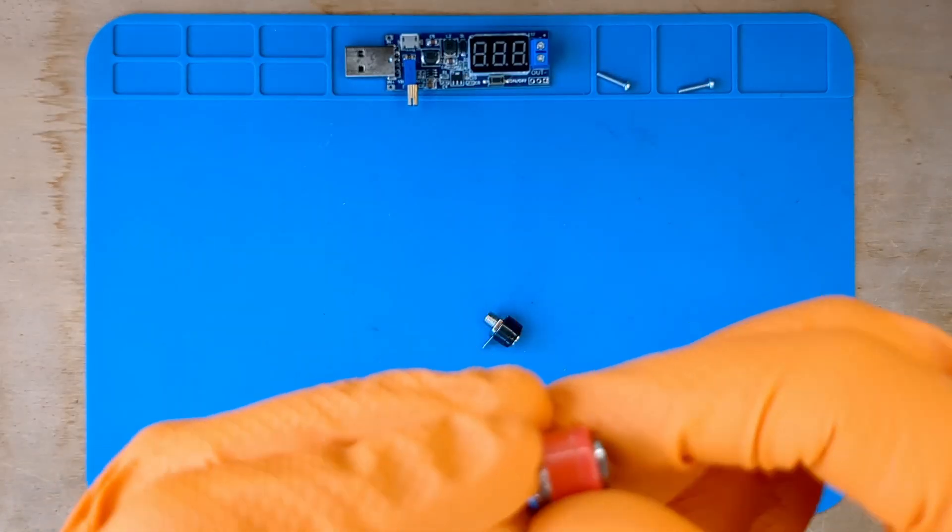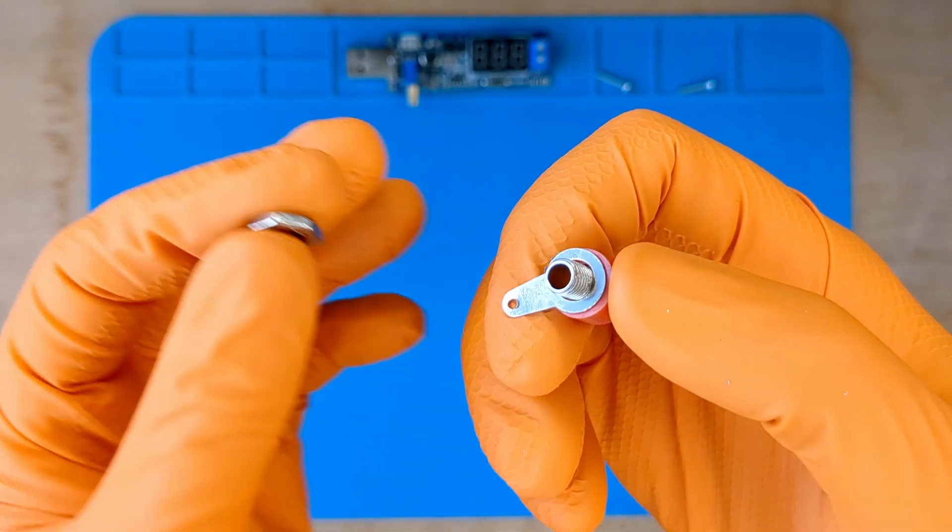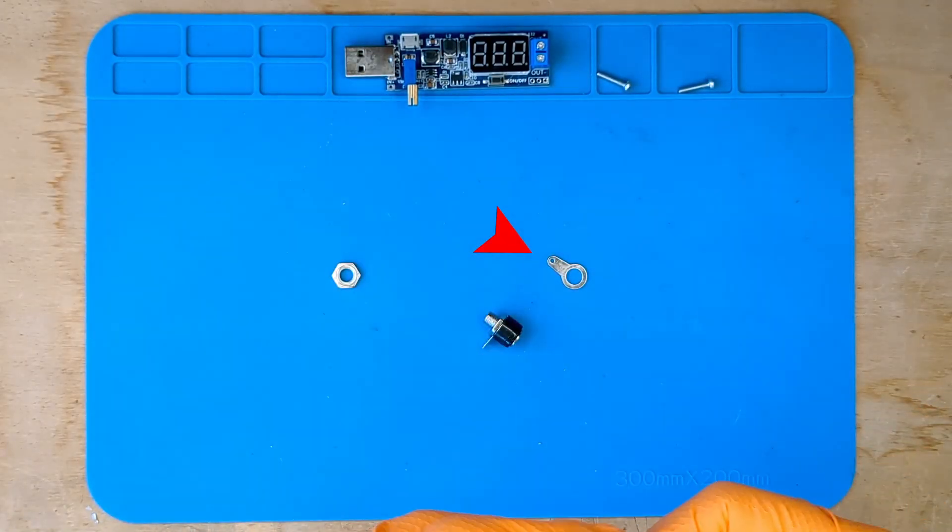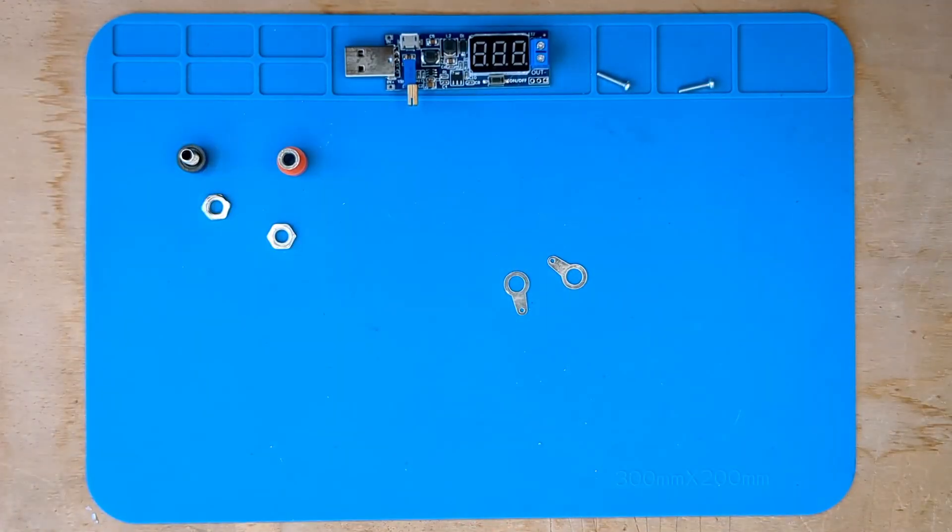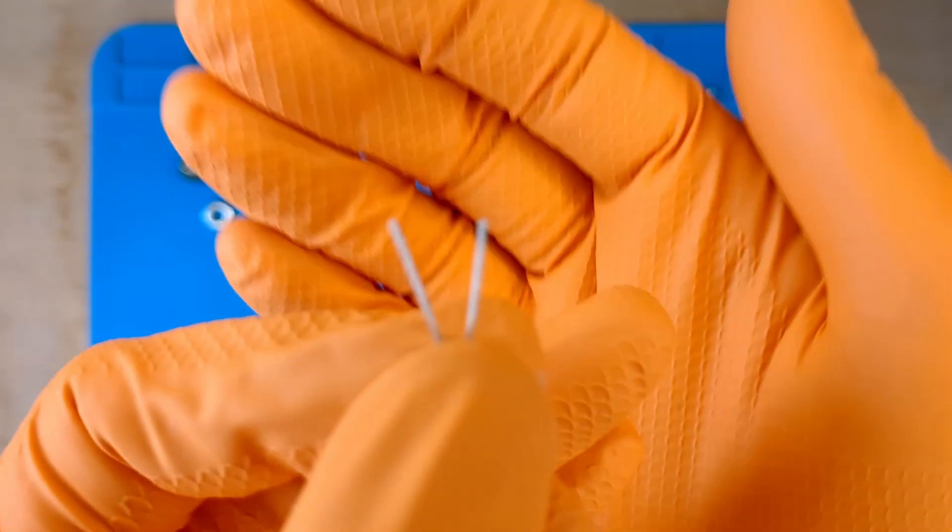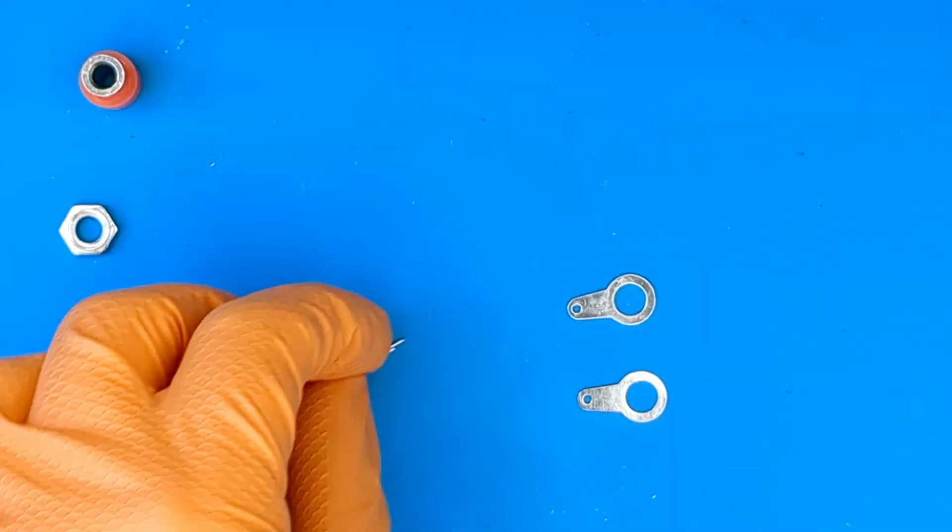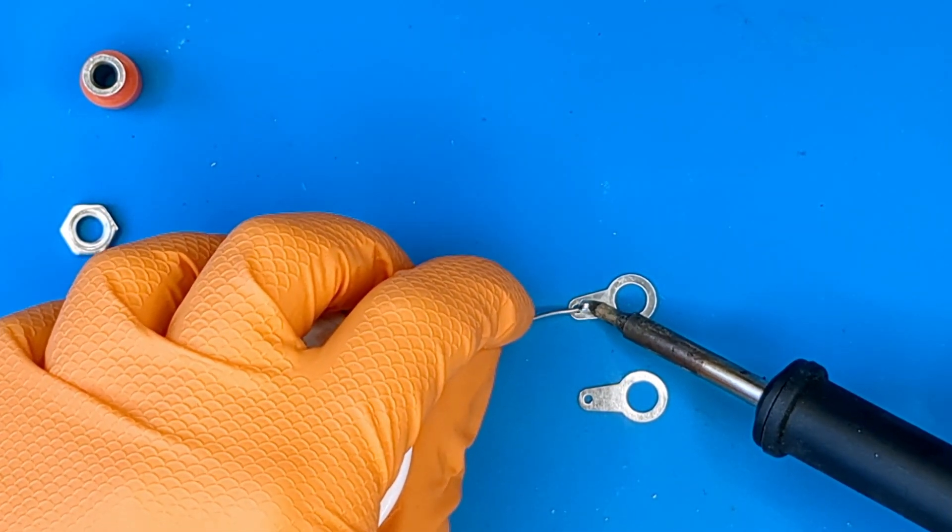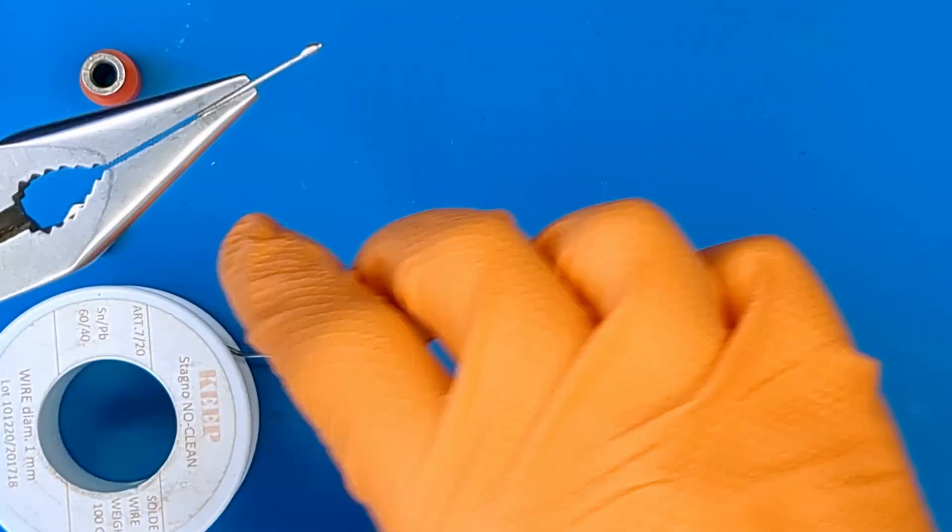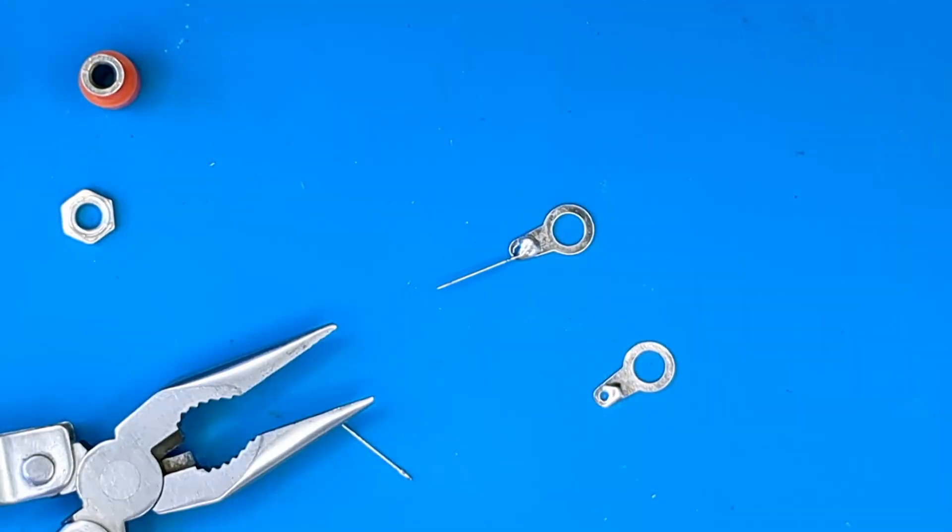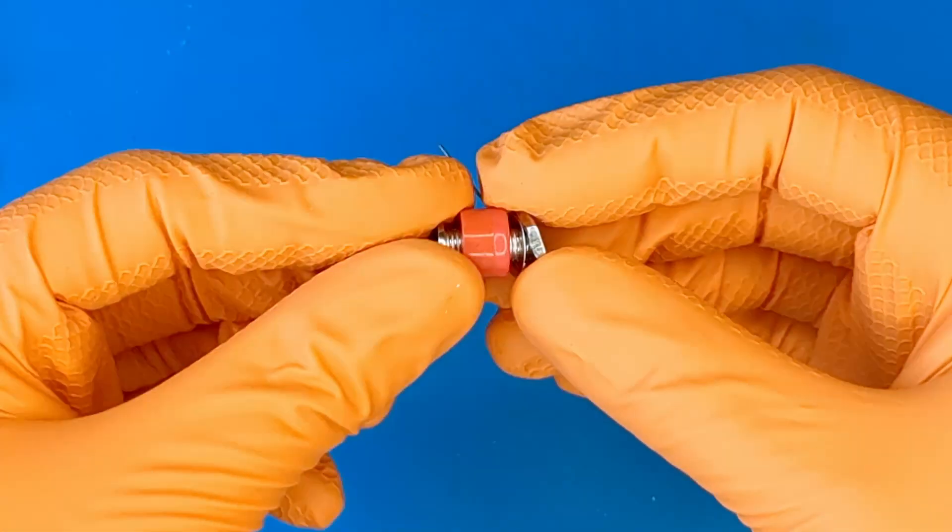It's time to assemble our power supply. First, unscrew the banana connector nut. Next, let's set aside the washers. After that, solder the wires onto the terminals. Finally, reassemble the connectors and tighten the nut firmly with pliers.